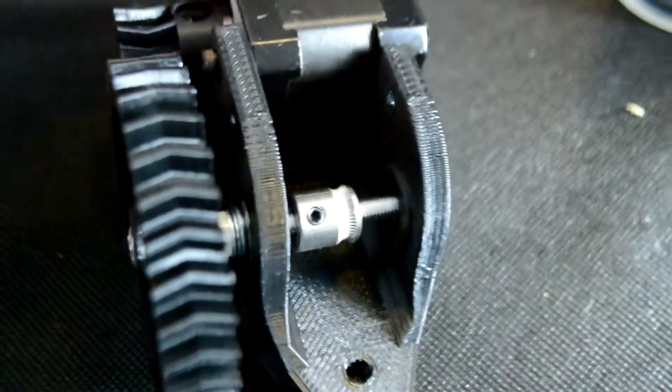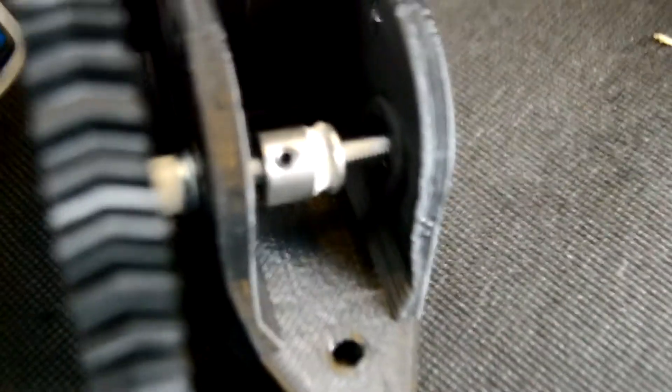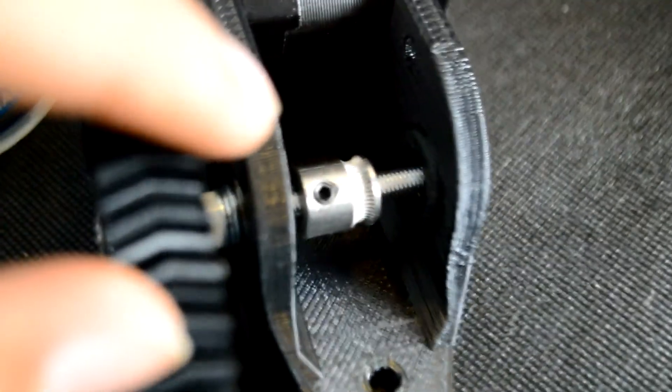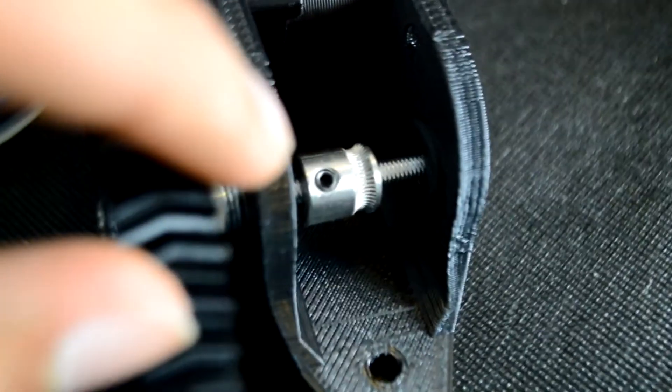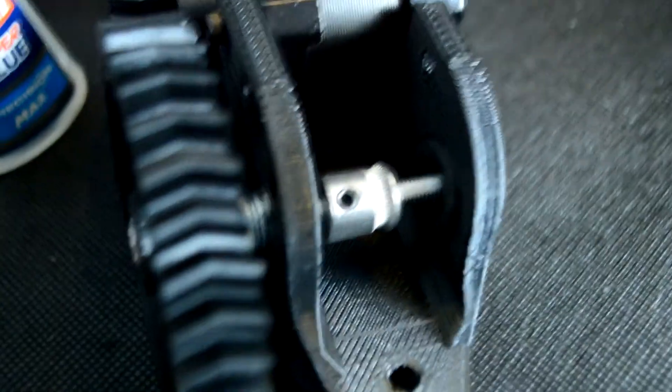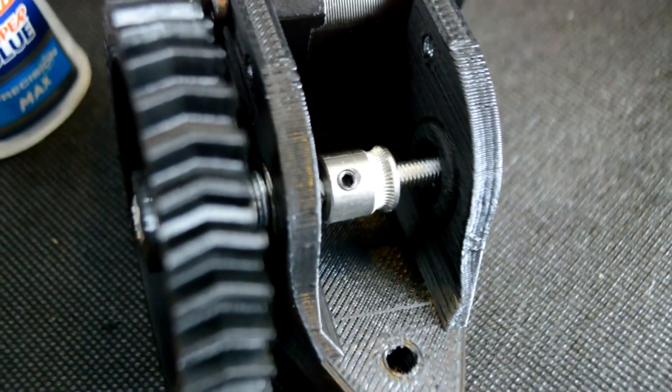I recommend adding a dab of super glue to the set screw there. And that should just ensure that it stays in place when you are printing.